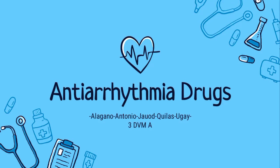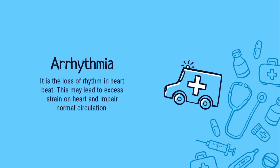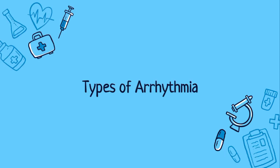Hello everyone, we are going to discuss about the anti-arrhythmic drugs. When defined, arrhythmia refers to the loss of rhythm of the heartbeat where it either beats too quickly, too slowly, or with an irregular pattern. It is a condition that needs attention since it may lead to excess strain on the heart and also impair normal circulation. Hence, anti-arrhythmic drugs are given to treat or to prevent abnormal heartbeats or arrhythmias. There are a few types of arrhythmia.